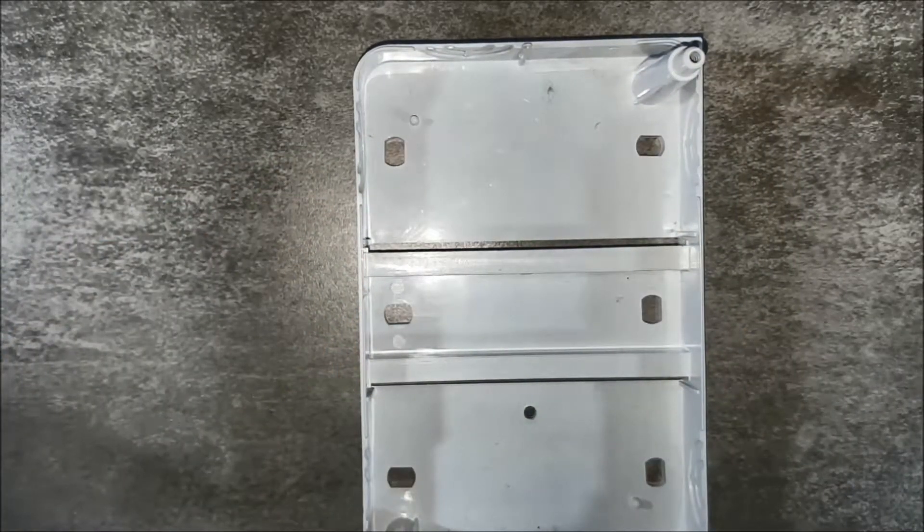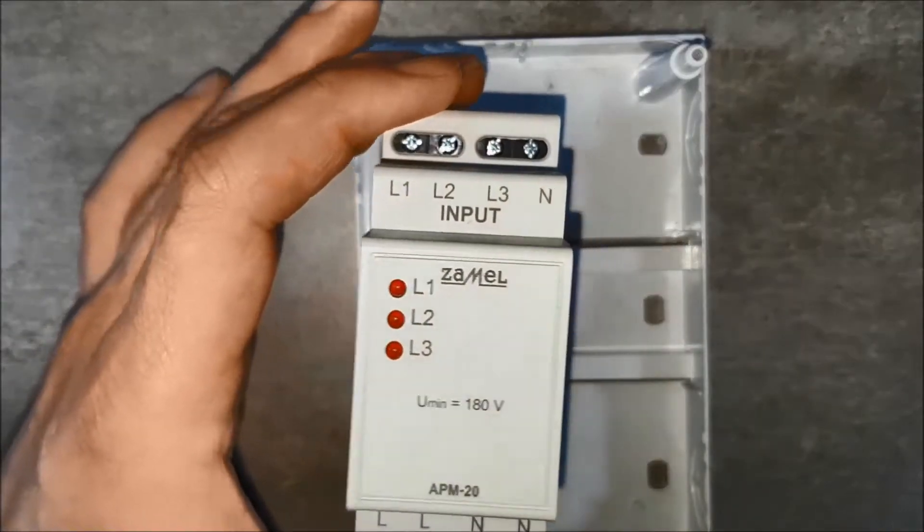Put the APM20 device on the TH35 rail. Spring clamps will help.